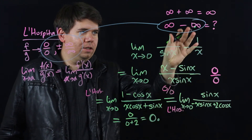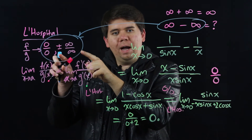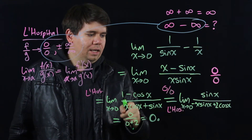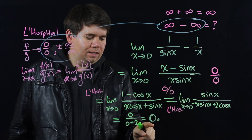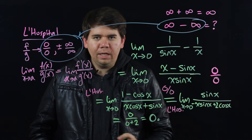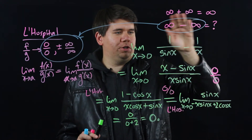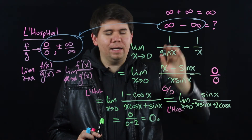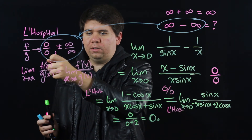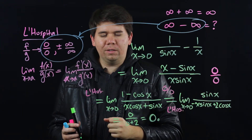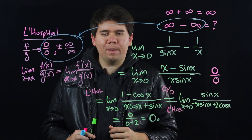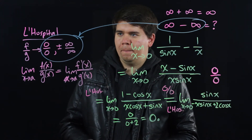We were able to find this limit by first changing it to one of the forms described by L'Hôpital's rule, and then repeatedly applying the rule until we got it down to a definite form — simply the answer zero. In general, whenever you have an indeterminate form like infinity minus infinity, you need to figure out some way to get it back to one of these two well-understood forms and then apply L'Hôpital's rule. We'll see more examples of this in the upcoming videos.